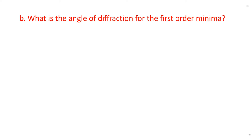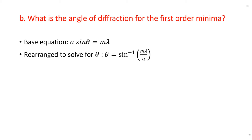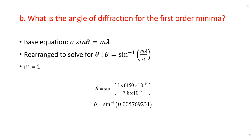Now that we have the wavelength, we can simply solve for theta by rearranging the base equation. Since we are asked to find the angle of diffraction for the first order minima, m is equal to 1. Solving the equation, we find that theta is equal to 0.331 degrees. This also confirms that the small angle approximation is in fact okay to use in these calculations, because theta is less than 10 degrees.